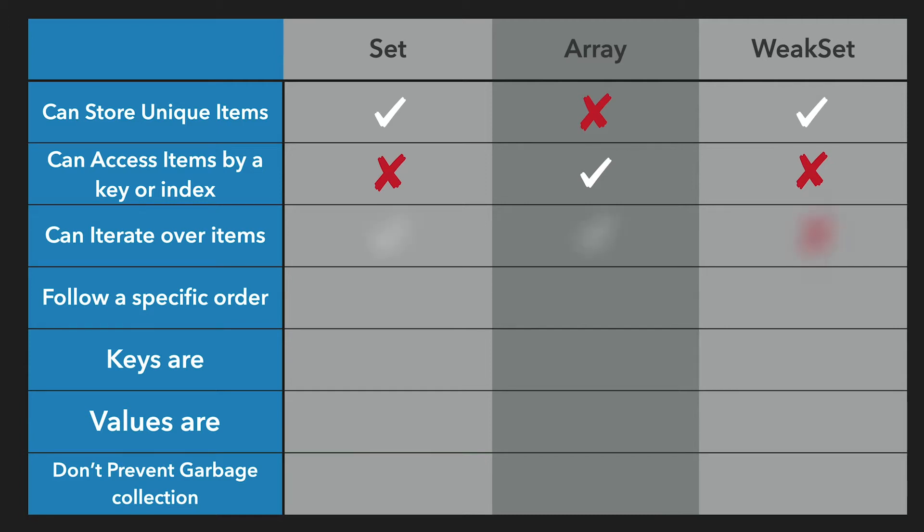For iteration, only WeakSet does not allow this, since the items are weak references and may not even be there while you iterate them — so that makes sense.